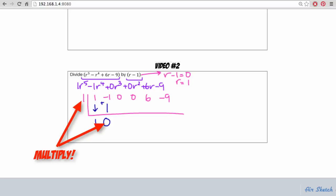So 1 times 0 this time is 0, add down, continue, 1 times 0 again, 0, add down.